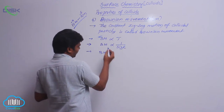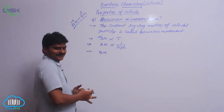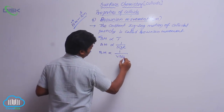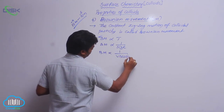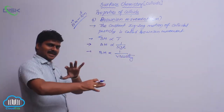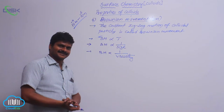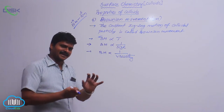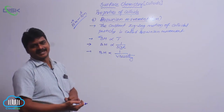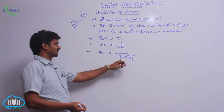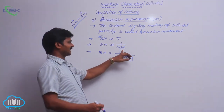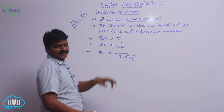How is Brownian movement related to viscosity? Brownian movement is also inversely proportional to viscosity. If the dispersion medium is more viscous, then particles cannot move easily. So: inversely proportional to viscosity, inversely proportional to size of dispersed particles, and directly proportional to temperature.